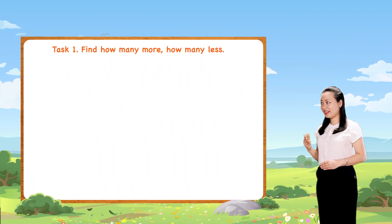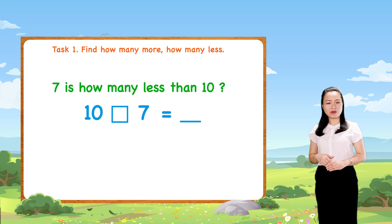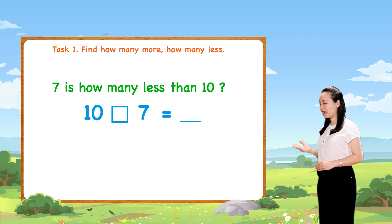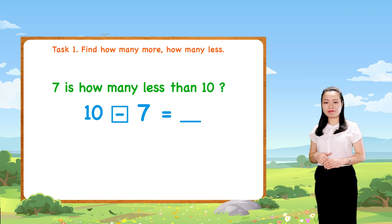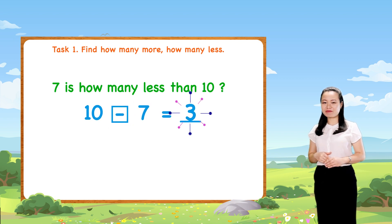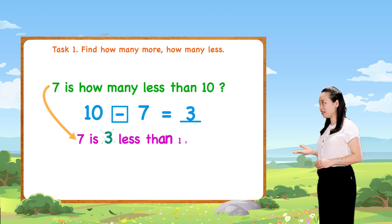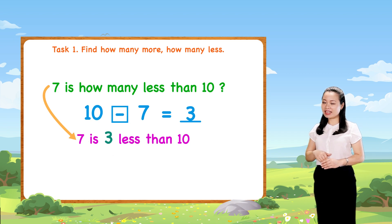Next, we have 10 minus 7 equals 3. So 7 is 3 less than 10.